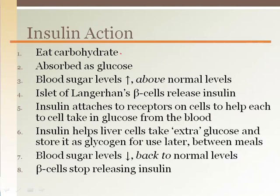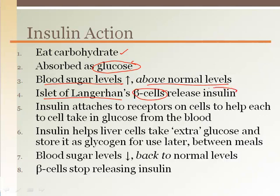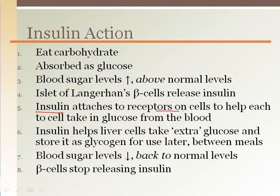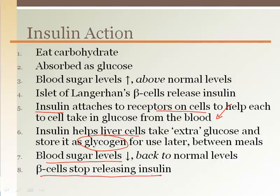To summarize insulin action: when we eat a carbohydrate, it becomes absorbed in our body as glucose, represented as blood sugar levels. As it rises above normal levels, the islets of Langerhans detect this, telling the beta cells to release insulin. Once insulin is released, it attaches to receptors on cell membranes and helps transfer glucose into the cells. Insulin also helps liver cells take up any extra glucose that wasn't used for immediate energy. The liver cells store it as glycogen to be used later between meals. As blood sugar levels drop back to normal, the beta cells stop releasing insulin.